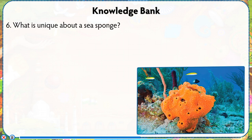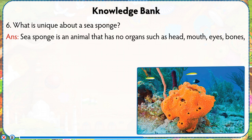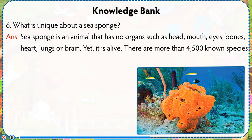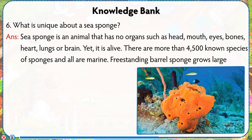What is unique about a sea sponge? Answer: Sea sponge is an animal that has no organs such as head, mouth, eyes, bones, heart, lungs or brain, yet it is alive. There are more than 4,500 known species of sponges and all are marine.